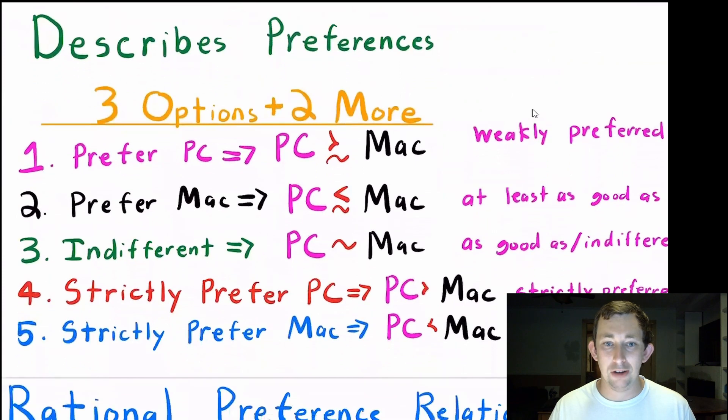So let's write out those options and introduce some notation. The first option, he could prefer the PC. We would say PC and then this squiggly greater than above this squiggly line, so that means he weakly prefers a PC to a Mac. We could say that he prefers a Mac, and then we would say PC is this squiggly less than with a squiggly line Mac.